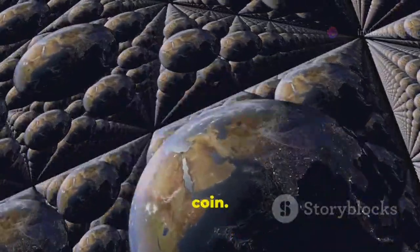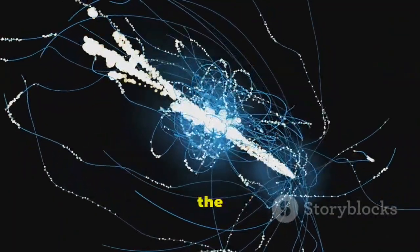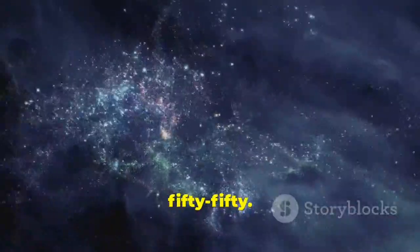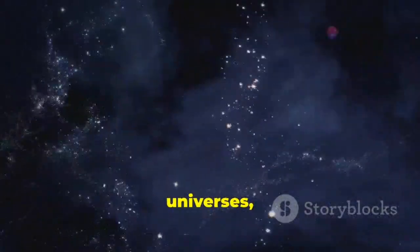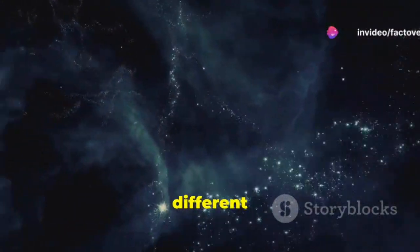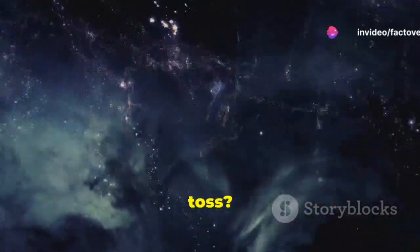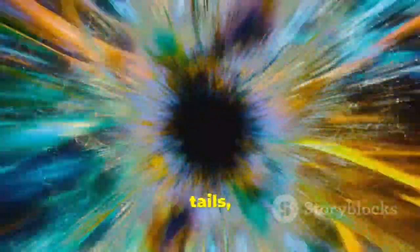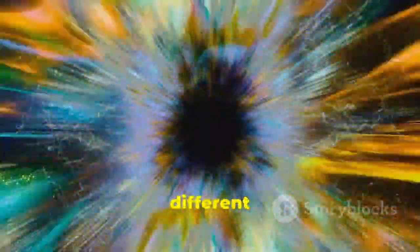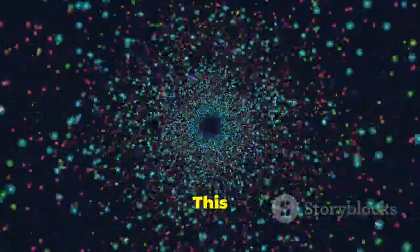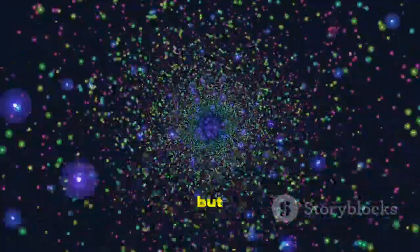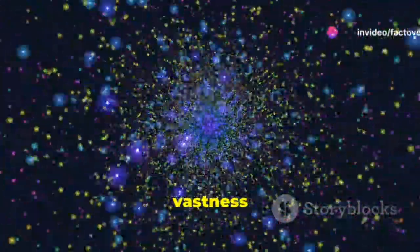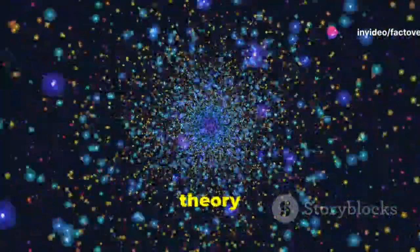Consider the example of flipping a coin. In our universe, the odds are close to 50-50, but what if there were countless other universes, each representing a different outcome of the coin toss? Some universes might have endless heads, others endless tails, and still others, a different ratio altogether. This is a simplified analogy, but it helps us grasp the vastness and diversity that the multiverse theory proposes.